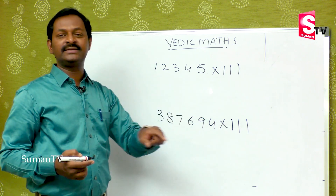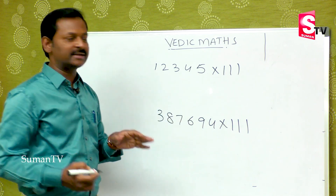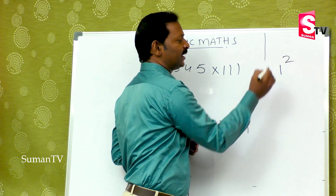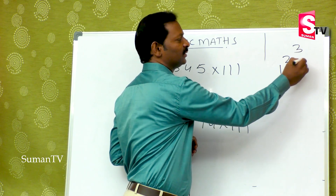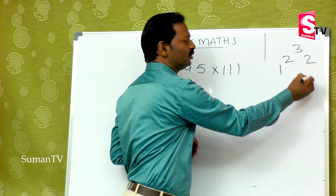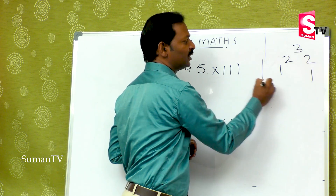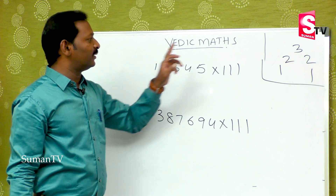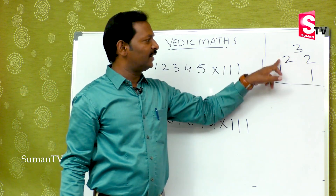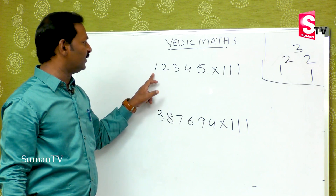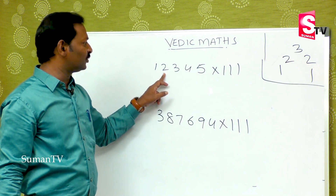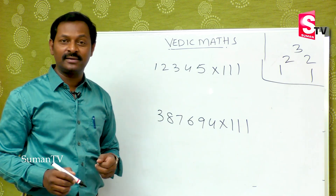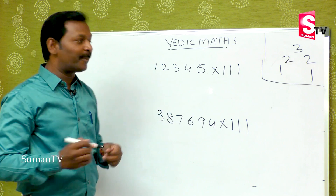So this is the 1-2-3 digit concept. The pattern is: first digit, then first plus second, then first plus second plus third. After that, last two digits and last one digit. This gives us the right answer. The pattern extends as: one, one-two, one-two-three, one-two-three-four, one-two-three-four-five.